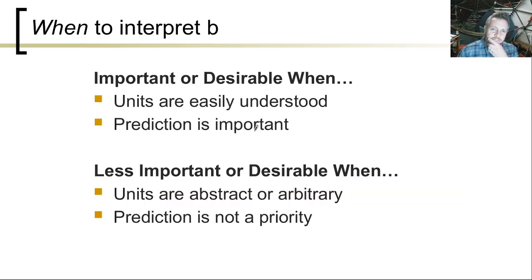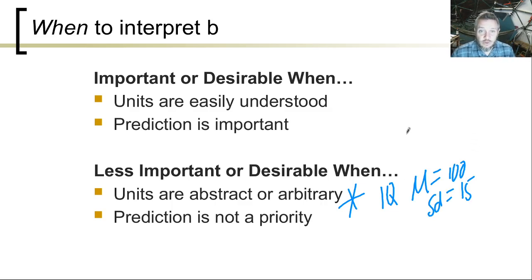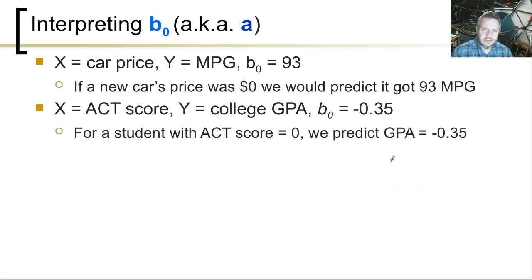So when do we interpret b1? When the units are easily understood and when prediction is important. It's less important or desirable when units are abstract or arbitrary — and in psychology there's a lot of this. Like IQ scales: the mean is 100, standard deviation is 15. What does that mean? What is one IQ point? We sometimes don't actually care about the prediction stuff — we just care about the correlation coefficient, and that's actually quite common.